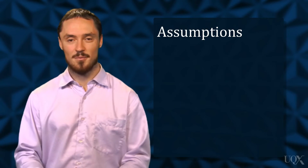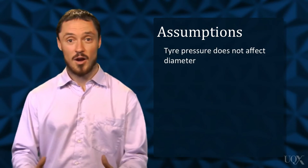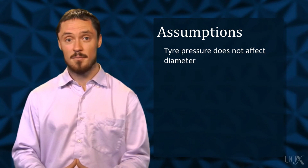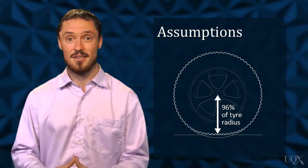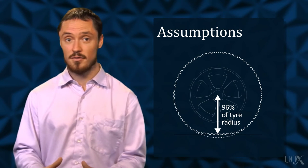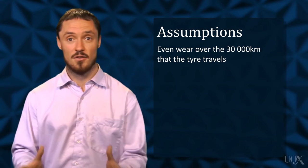As we solve this problem, we need to operate under the following assumptions. Tyre pressure does not affect diameter. A tyre is not a perfect circle and the rolling radius is 96% of the actual radius. A tyre is subjected to even wear over the entire distance.